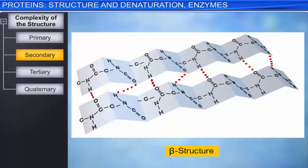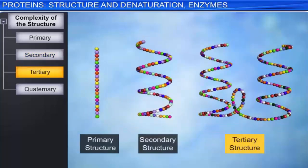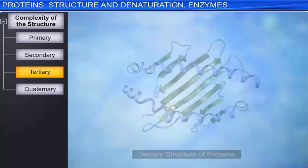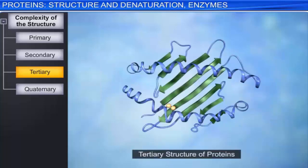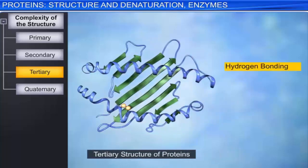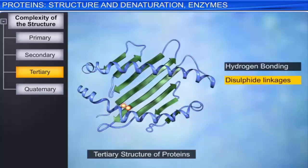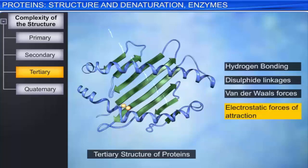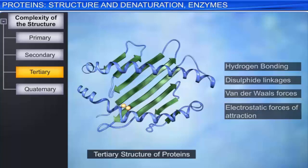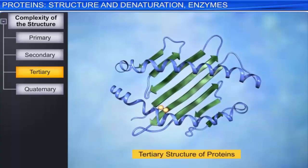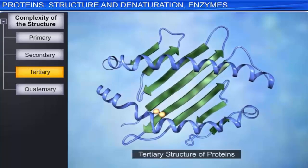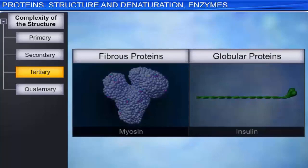The tertiary structure of proteins describes the further folding of the secondary structure. The tertiary arrangement of helices and sheets is held together by hydrogen bonding, disulphide linkages, Van der Waals forces, and electrostatic forces of attraction. The further folding of the secondary structure gives rise to two major molecular shapes: fibrous and globular proteins.